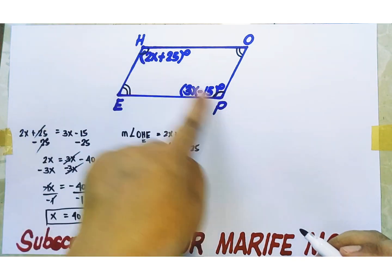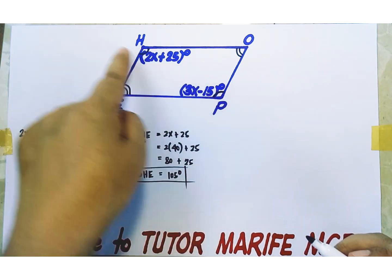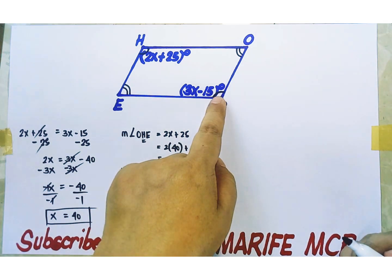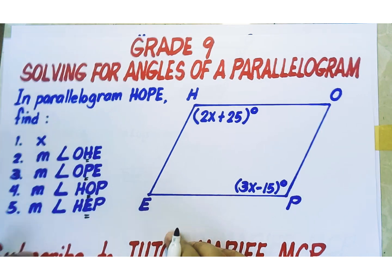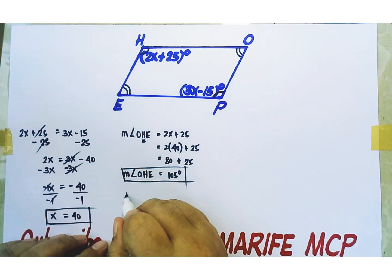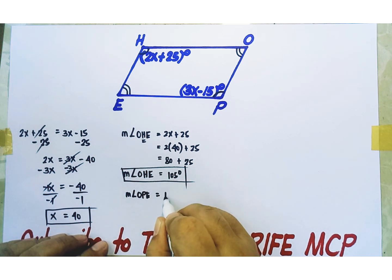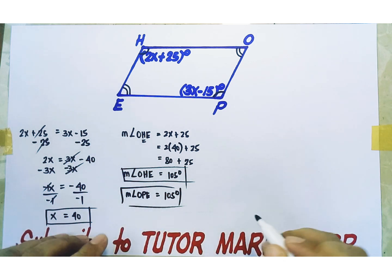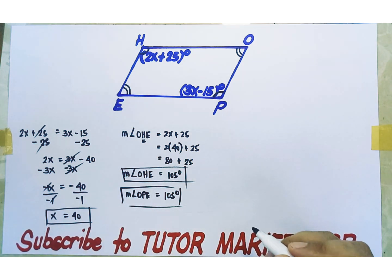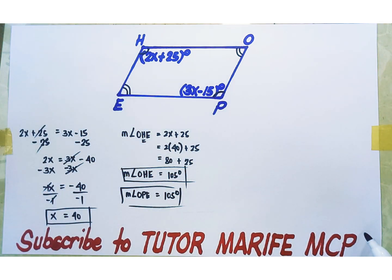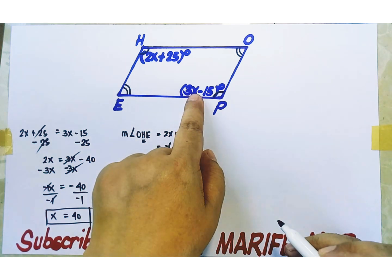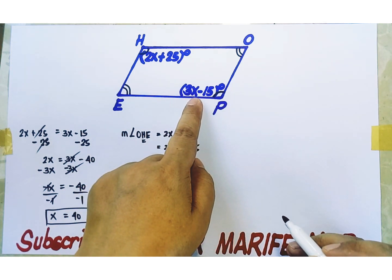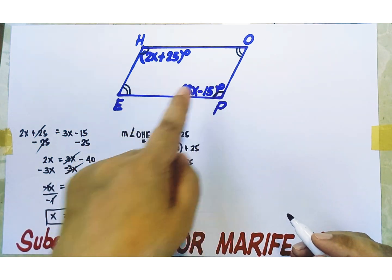Since these are opposite angles and opposite angles of a parallelogram are congruent or they have equal measures, then angle P — measure of angle OPE, where P is the middle letter and the vertex of the angle — is also equal to 105 degrees. We can readily obtain the measure of angle OPE because of the property of a parallelogram relating the opposite angles — they are congruent. The other way of solving for the measure of angle OPE is using X equals 40: substitute 40 into X of the expression 3X minus 15. 3 times 40 is equal to 120, minus 15 equals 105 degrees.